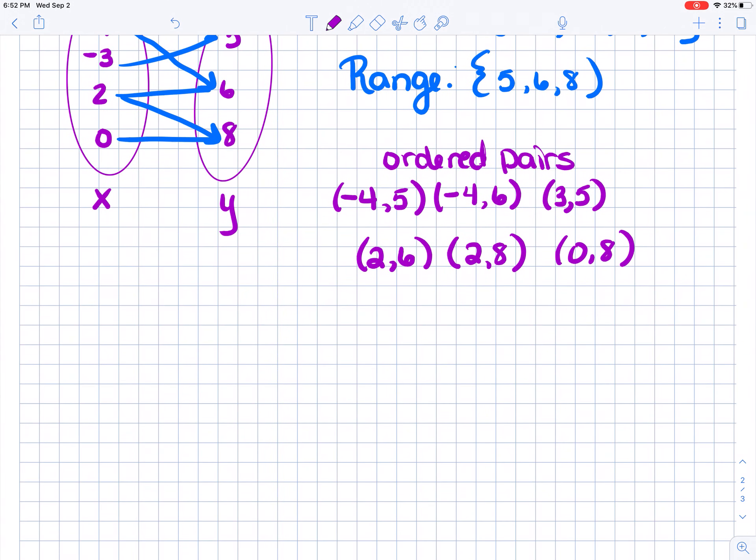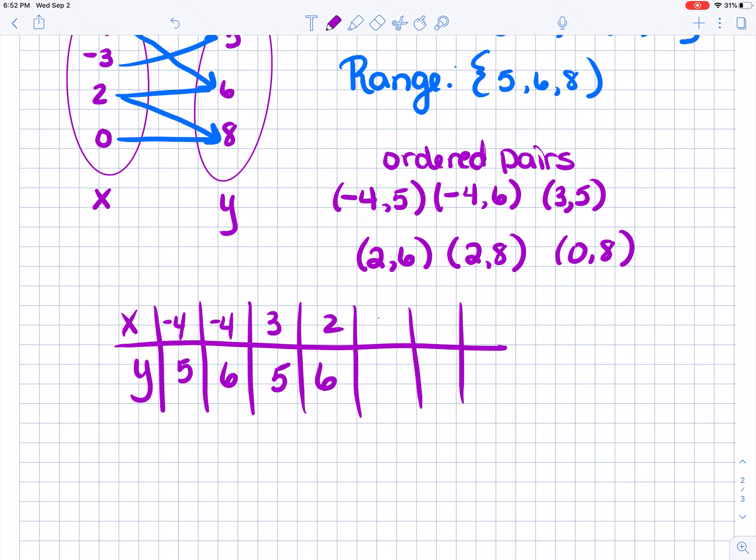And then we can do our table. Let's do a horizontal table this time. My X and my Y. And again, remember, we just have to make sure the pairs are together. So negative 4, 5. Negative 4, 6. 3 goes with 5. 2 goes with 6. But 2 also goes with 8. And 0 goes with 8. So that's what you're going to practice tonight, is representing relations in a couple different ways.